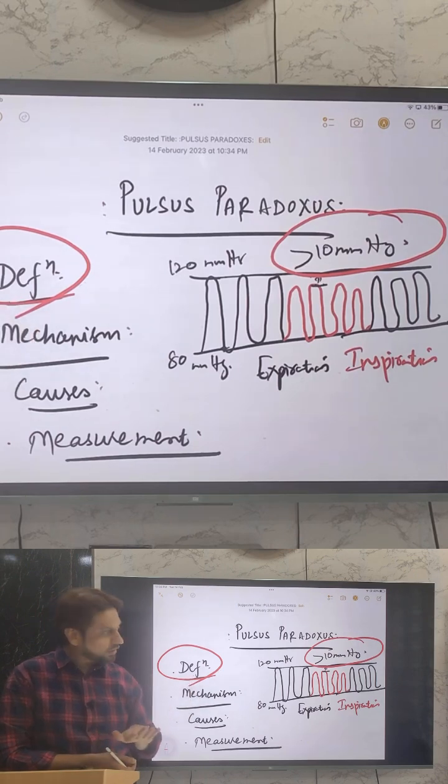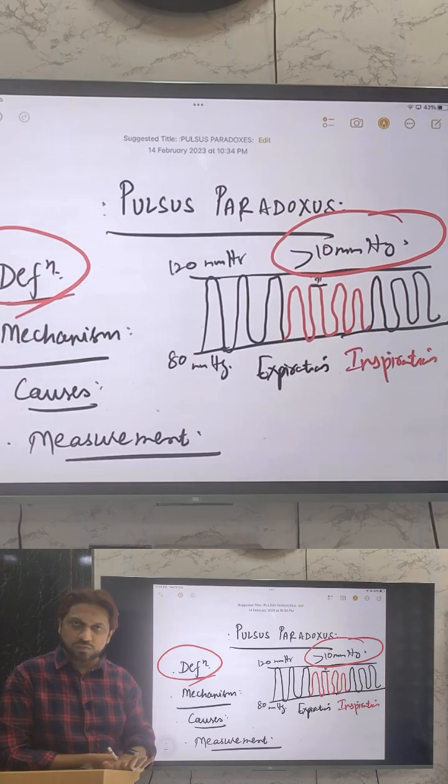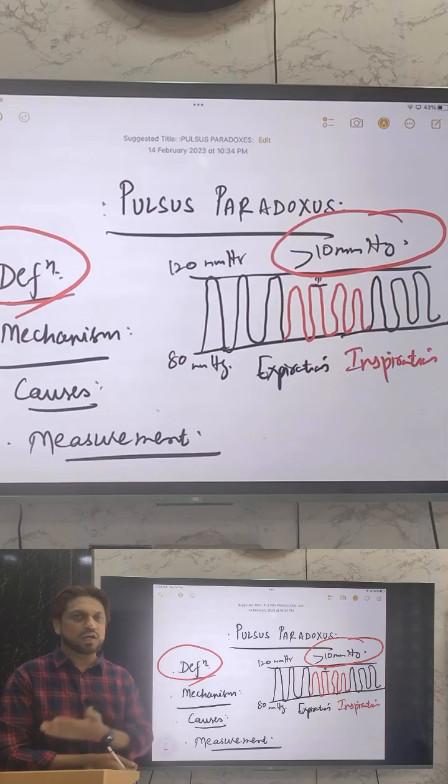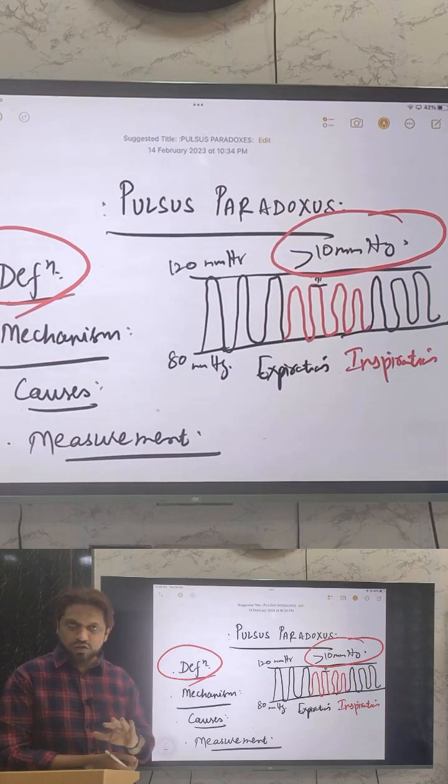Normally there is a fall in the systolic blood pressure during inspiration, but in some clinical diseases like cardiac tamponade, constrictive pericarditis, and some pulmonary disorders, this condition is exaggerated. So it's not a paradoxical phenomenon; it is a normal phenomenon which is exaggerated.